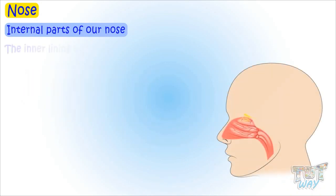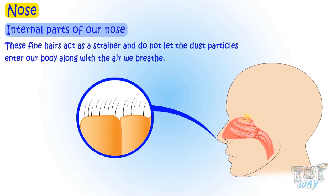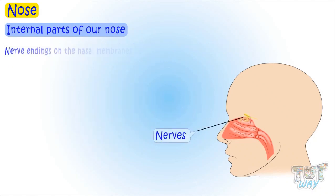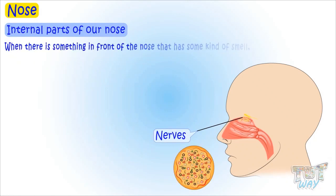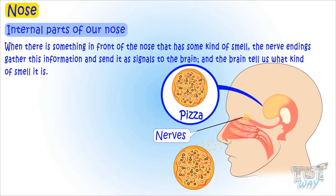The inner lining of our nose is lined with fine hairs. These fine hairs act as a strainer and do not let the dust particles enter our body along with the air we breathe. The nerve endings on the nasal membranes help us to smell. When there is something in front of the nose that has some kind of smell, nerve endings gather this information and send it as signals to the brain, and the brain then tells us what kind of smell it is.